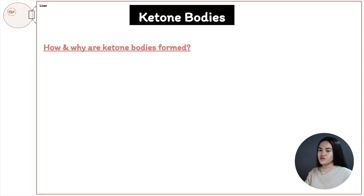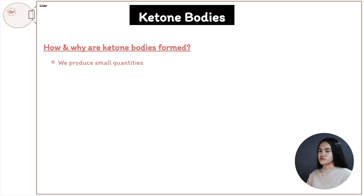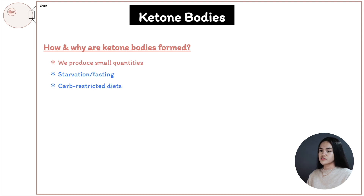How and why are ketone bodies formed? Under normal and healthy conditions, we actually produce small quantities of ketone bodies. However, when glucose is not available, we require an alternate energy source, and ketone bodies become our main source of fuel. The formation of ketone bodies occurs during periods of starvation or fasting, carbohydrate-restrictive diets, long periods of exercise, alcoholism, or untreated diabetes.